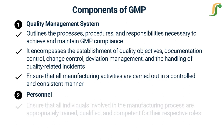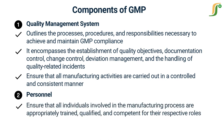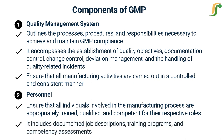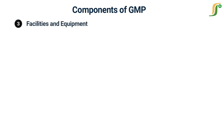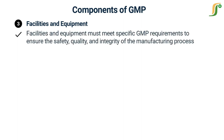The second component is Personnel. The personnel component of GMP focuses on ensuring that all individuals involved in the manufacturing process are appropriately trained, qualified, and competent for their respective roles. This includes having documented job descriptions, training programs, and competency assessments. Adequate staffing levels, clear lines of responsibility, and effective communication channels are also crucial aspects of personnel management within GMP.